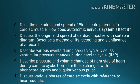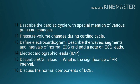Number 9, describe pressure and volume changes of the right side of the heart during the cardiac cycle; correlate these changes with phonocardiogram and jugular venous pulse. Number 10, discuss various phases of the cardiac cycle with reference to heart sounds. Number 11, describe the cardiac cycle with special mention of various pressure changes. Number 12, pressure-volume changes during the cardiac cycle.